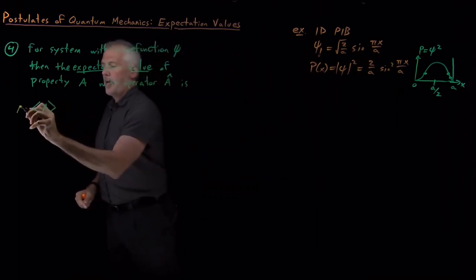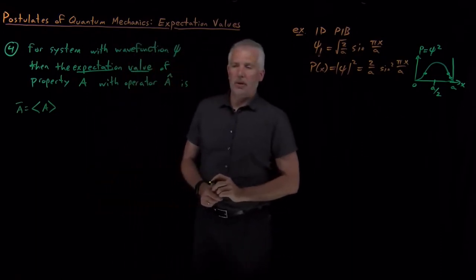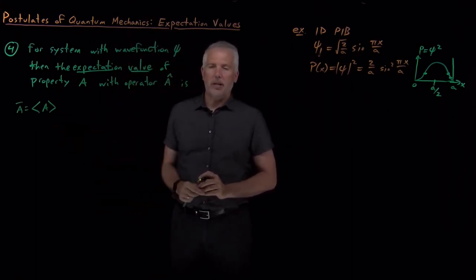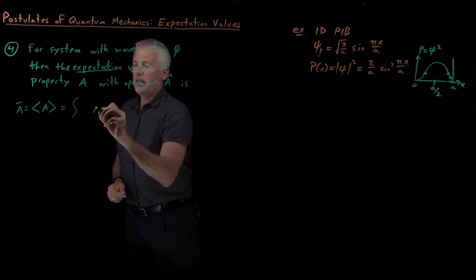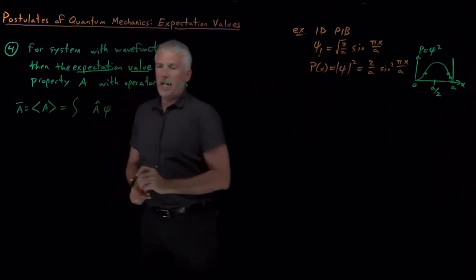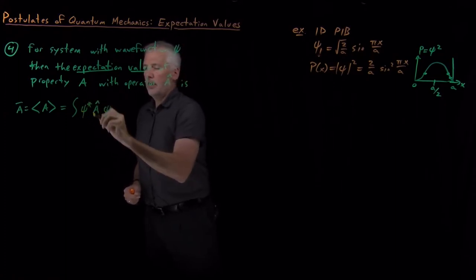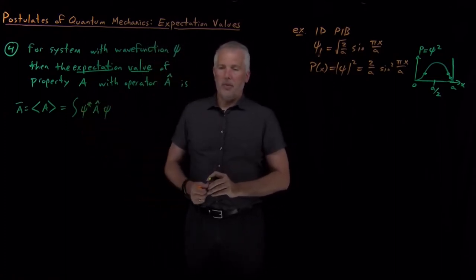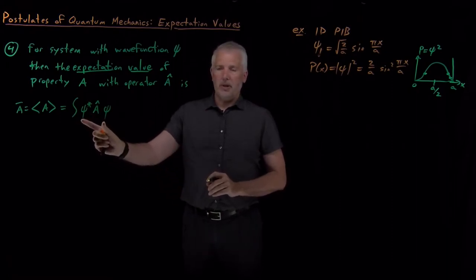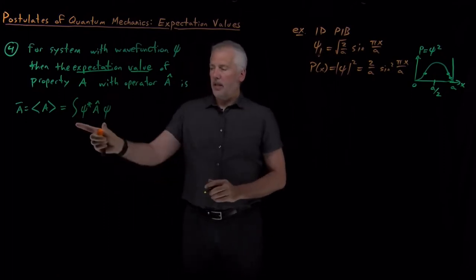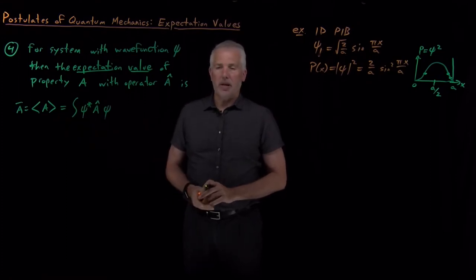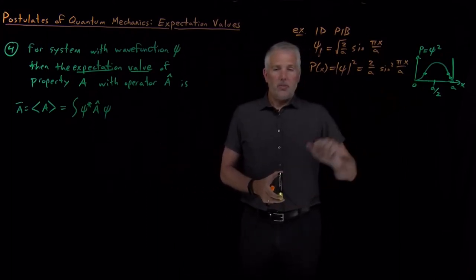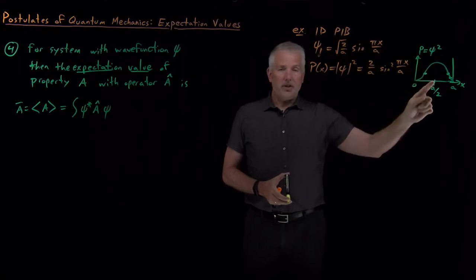You might be more familiar with thinking of an average as A with a bar on top of it — I mean exactly the same thing when I write A with angle brackets around it. The average or expectation value of a property can be calculated by taking the operator, acting on the wave function with it, and pre-multiplying by the complex conjugate of the wave function — sandwiching the operator between two copies of the wave function. Integrating that over everywhere gives a number: the average value of the property expected when making multiple measurements.